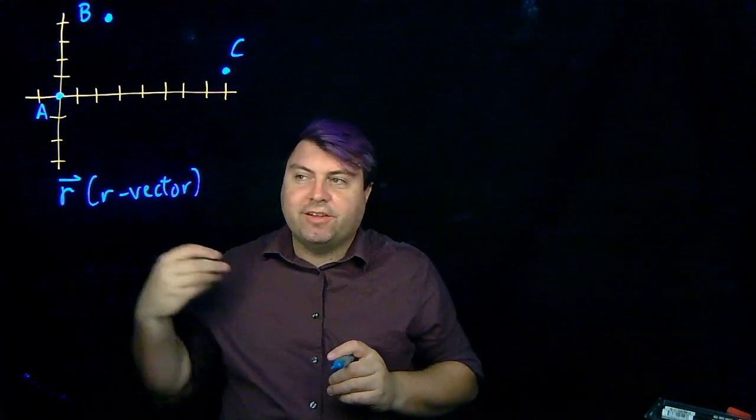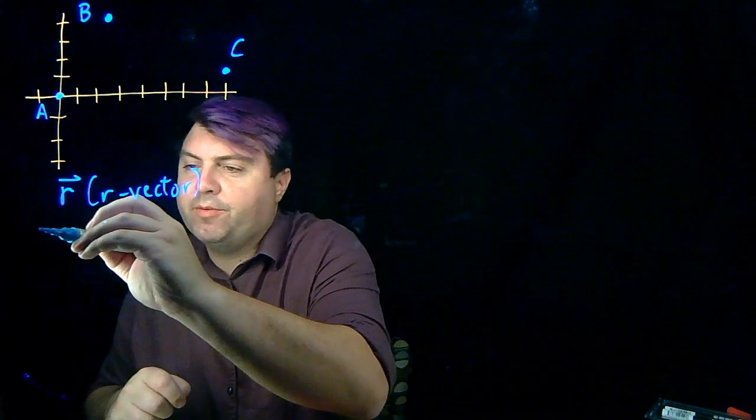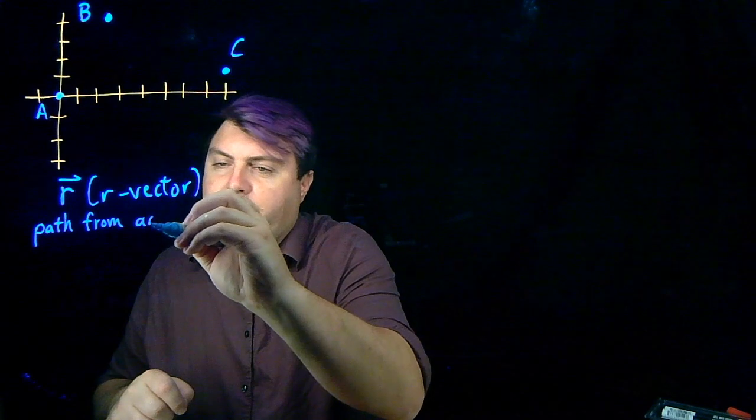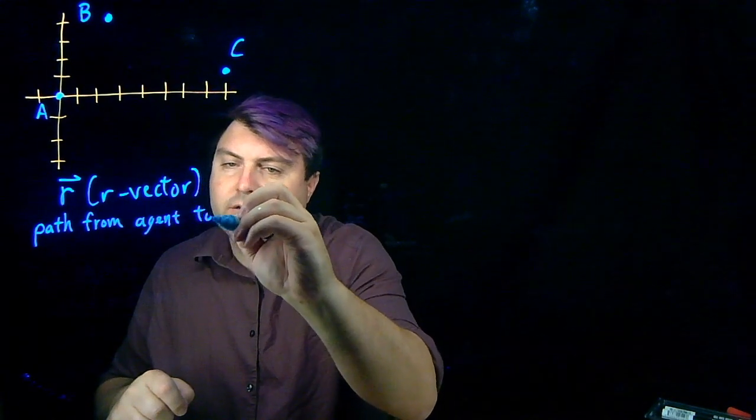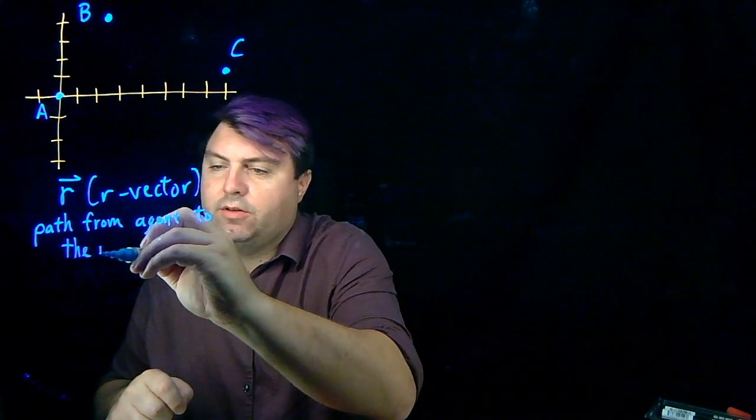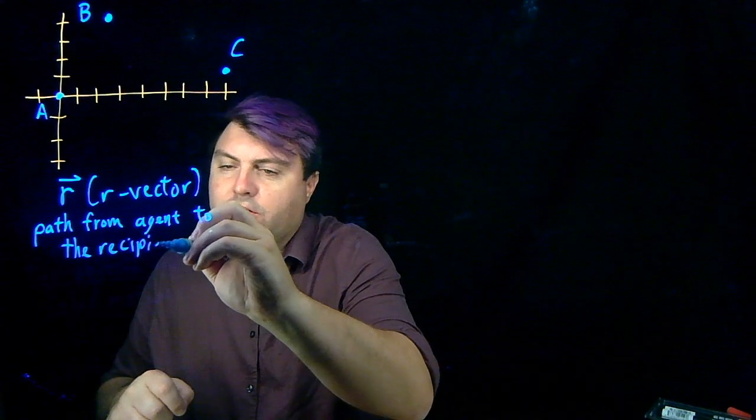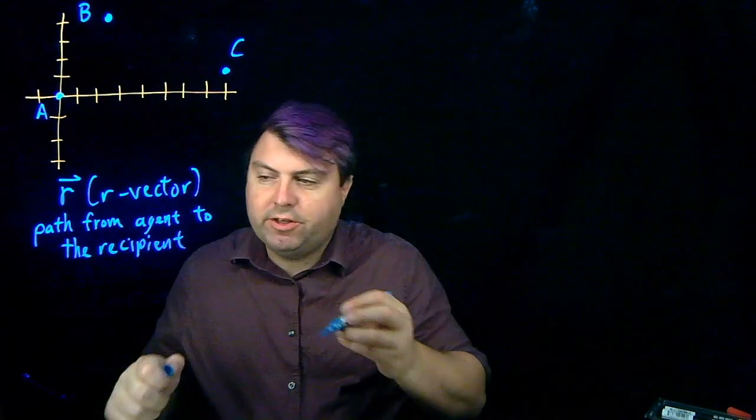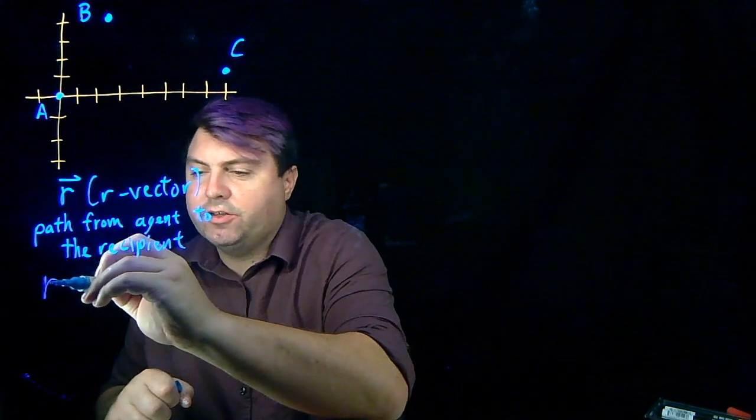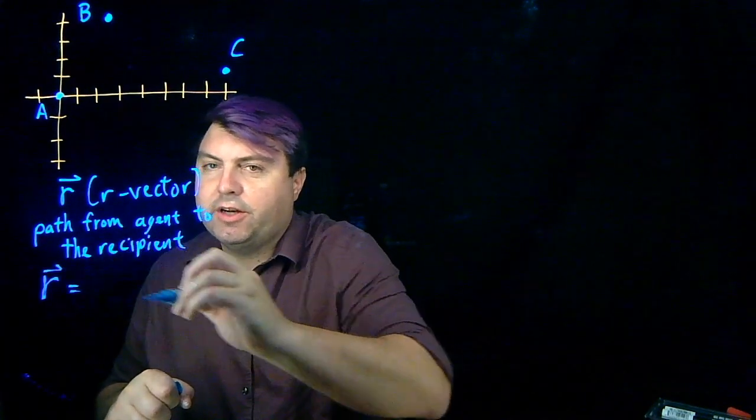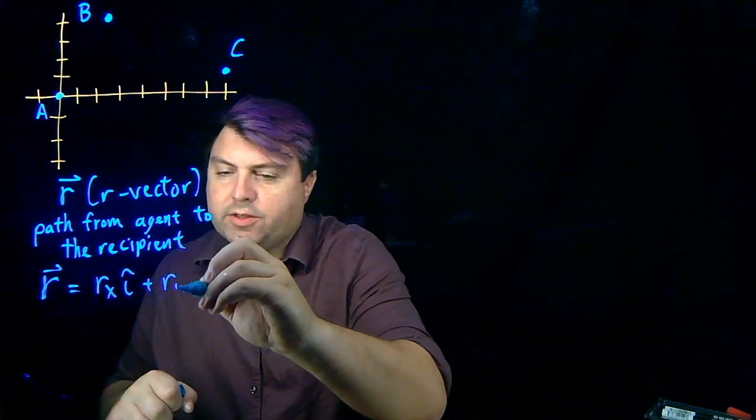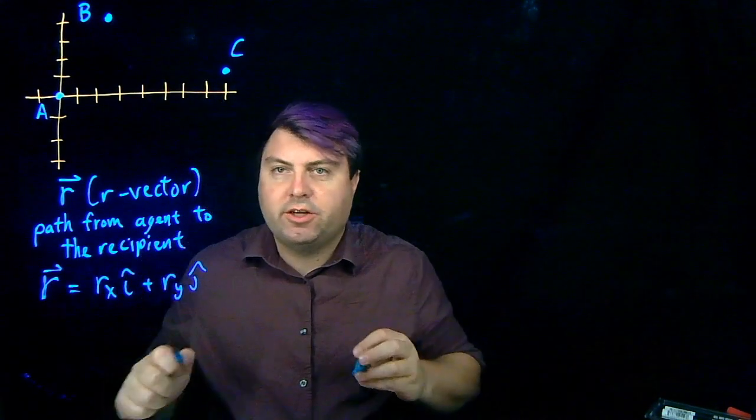So when we're talking about r-vector, and then that will get into r-hat as well as r and r-squared, this is our path from the agent to the recipient. And this sounds really scary until we just use a little bit easier notation where we say that r-vector is equal to r_x i-hat plus r_y j-hat.